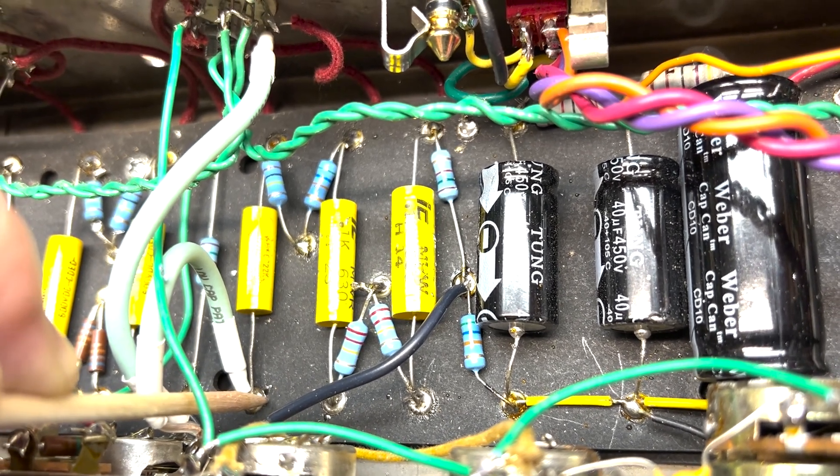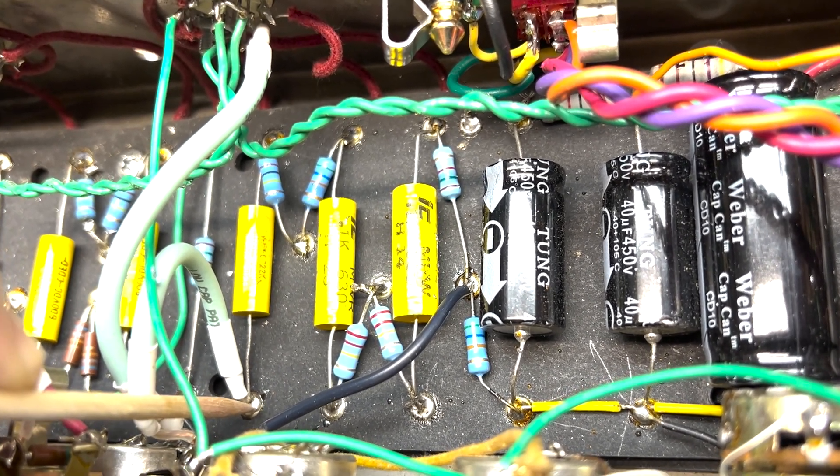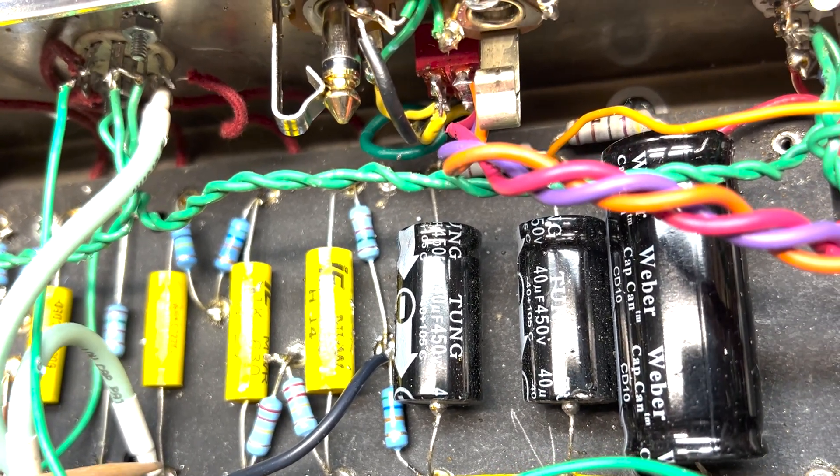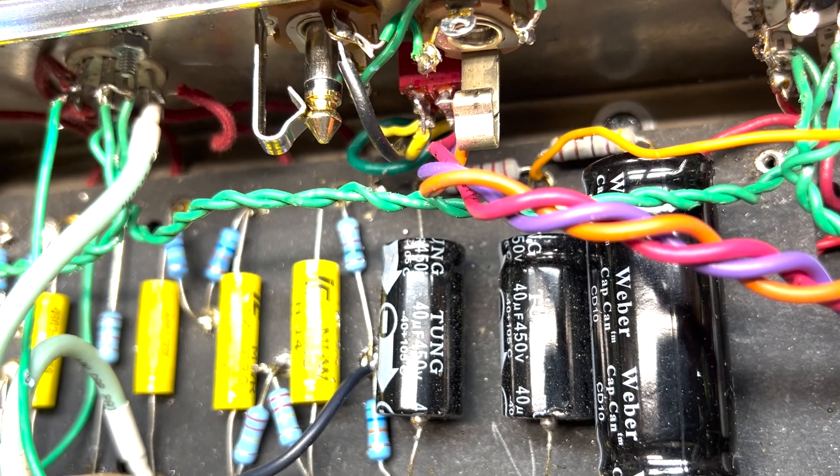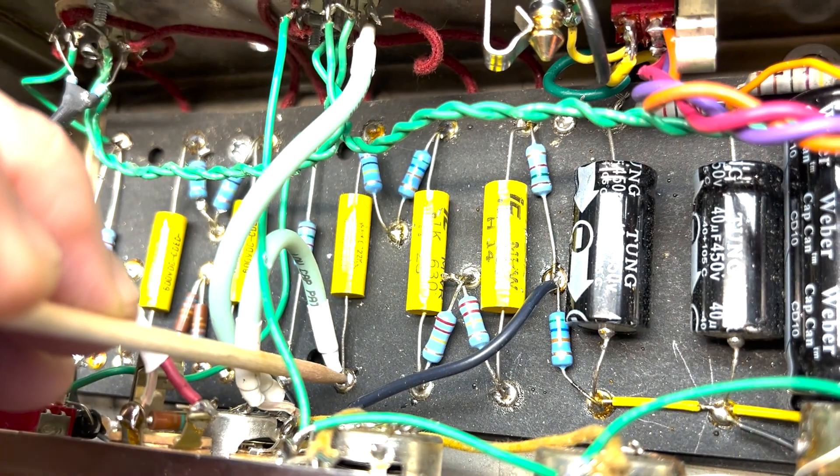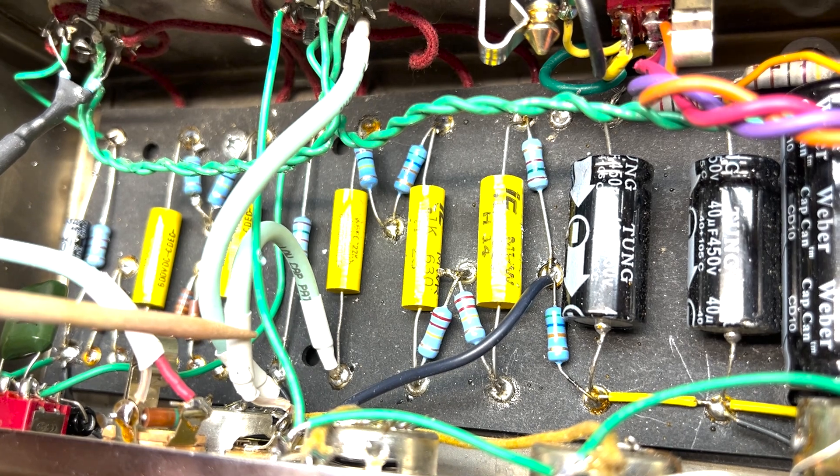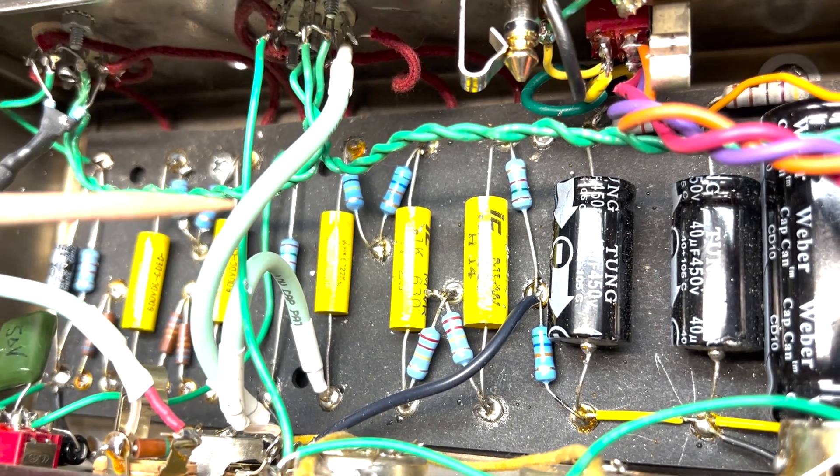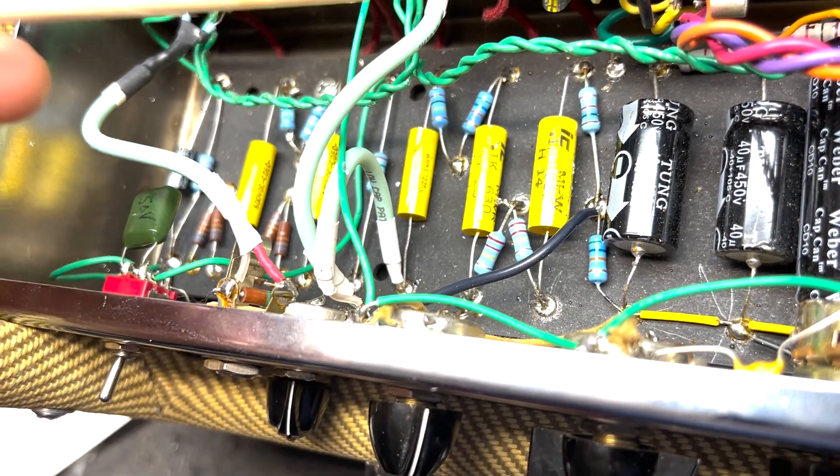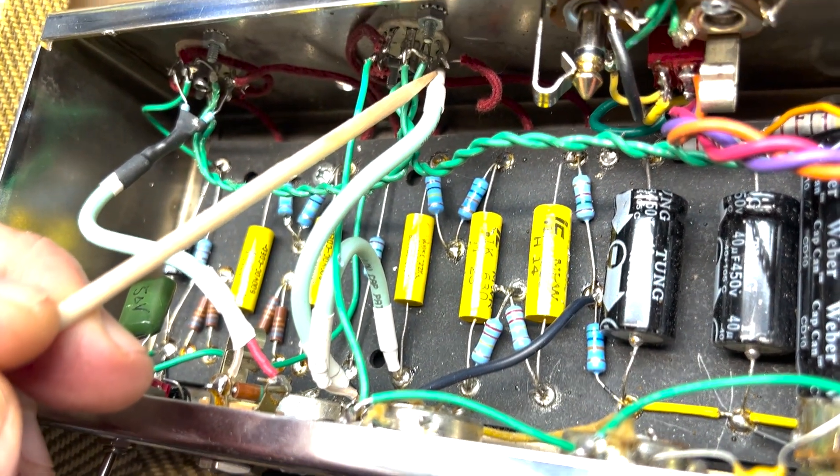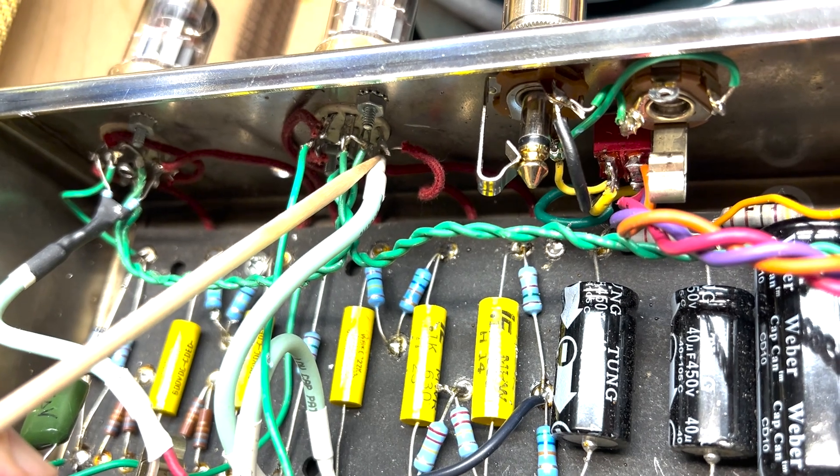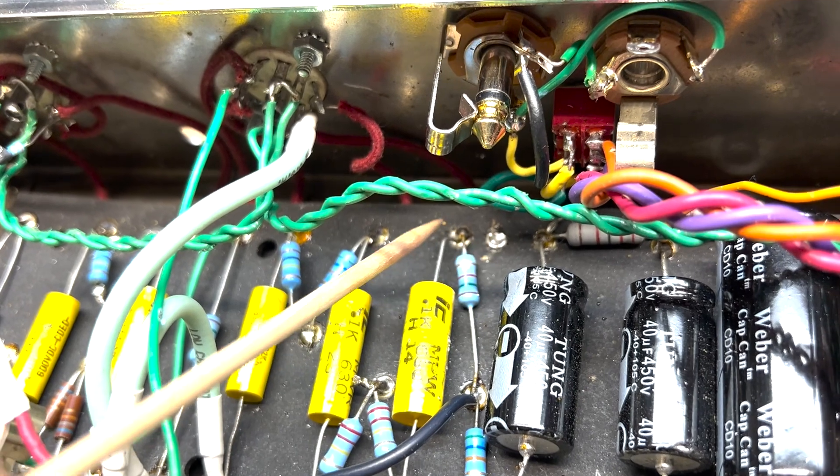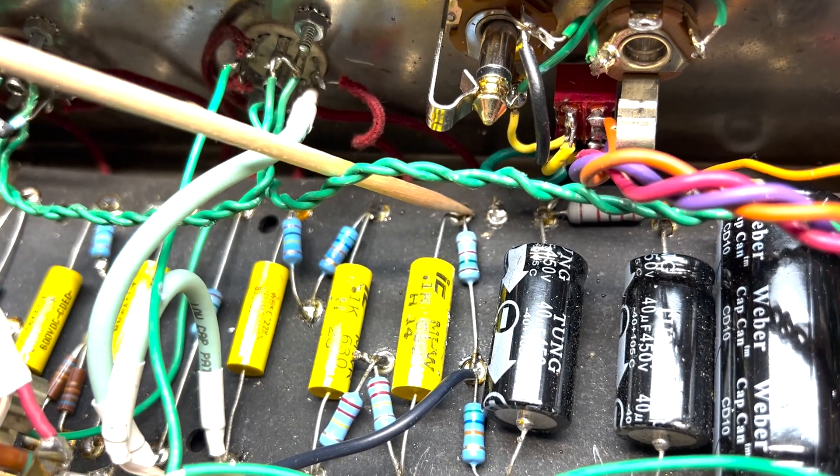So currently this signal goes from the 0.022 into this shielded cable right into the potentiometer, and this goes out and it's going to feed right to V2 pin 7. This wire that used to be over here used to go straight up into where this is now soldered in place.